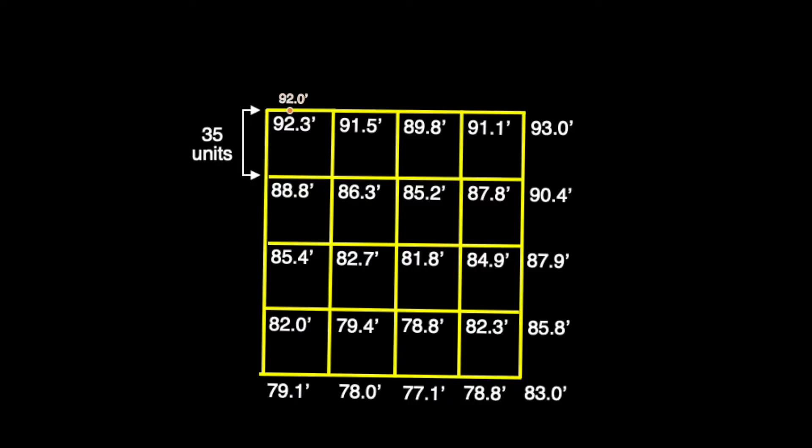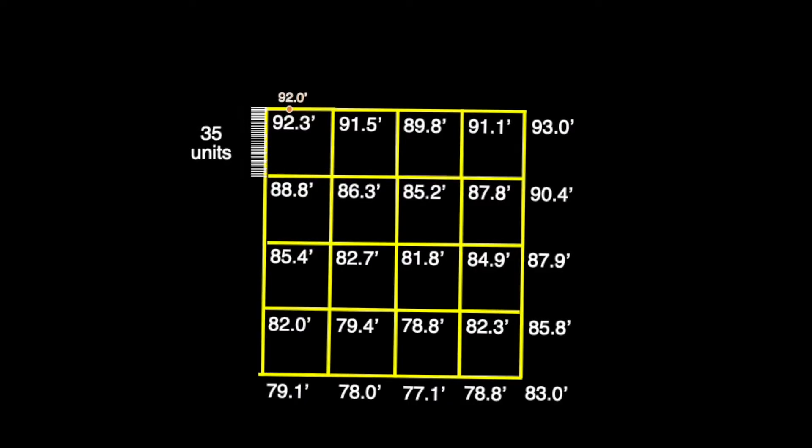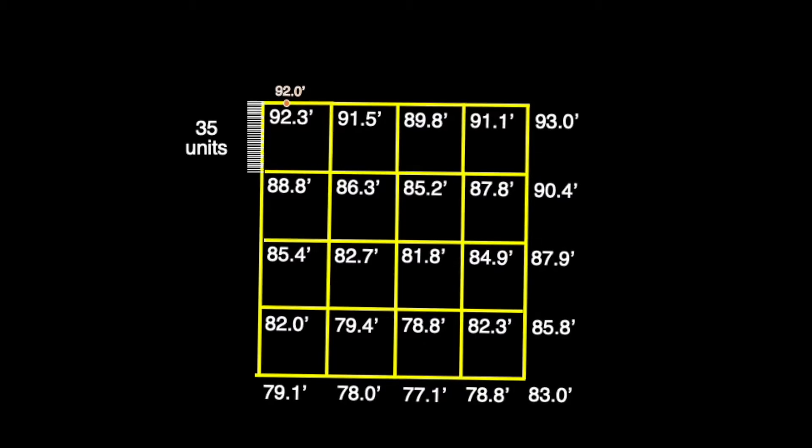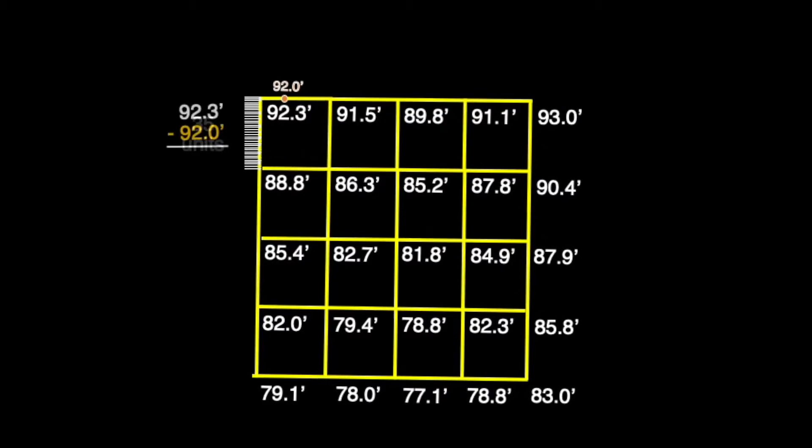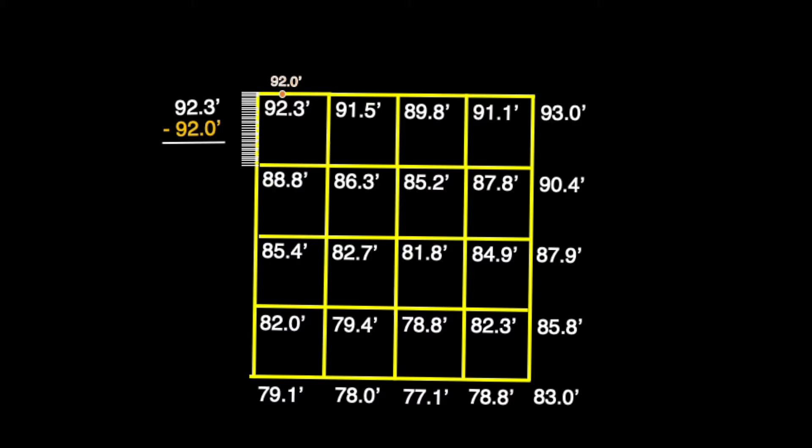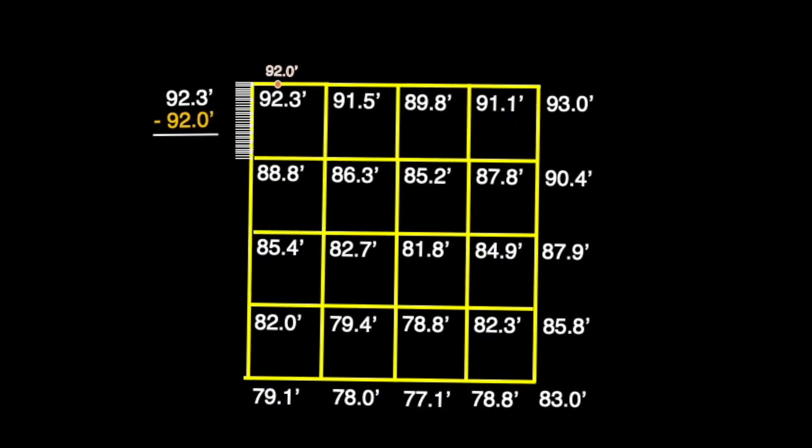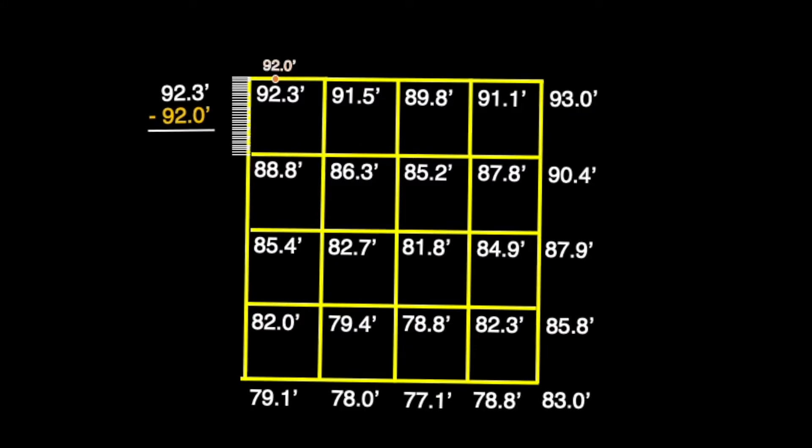With 35 units of space now available to us, we just need to know on which one the 92 foot point rests on. To obtain this, just as before, we'll take our elevation of 92.3 feet as a starting point and subtract the desired whole number contour point from it.